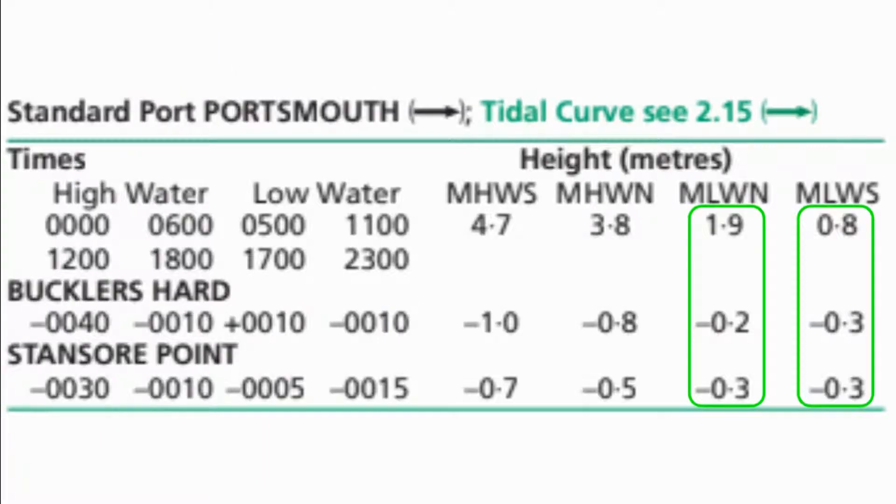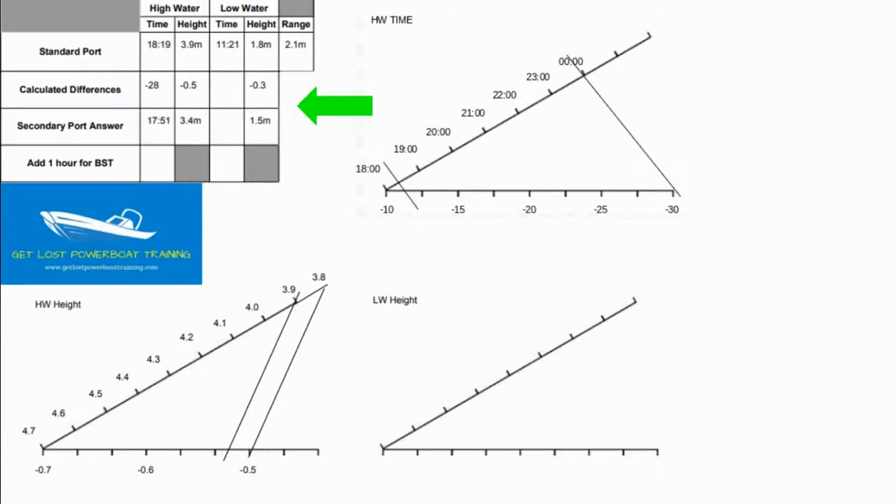Now that we have that high water height we still need our low water height. Referring to our standard port secondary port information table we can see that a low water height of 1.9 would be minus 0.3 metres and a low water height of 0.8 would be minus 0.3 metres. So what that table is telling us is regardless of the low water height we'll always have 30 centimetres less at Stansworth Point. Back to our template then and there's no need to fill out the triangle because it's always 30 centimetres less at the secondary port. So we can just fill out our table: 1.8 metres minus 0.3 metres gives us a low water height of 1.5 metres and that's it.